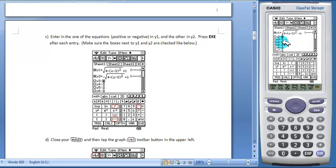And then to complete the circle we need to graph the negative of this as well. You can highlight, press, drag, and release. And tap exe.